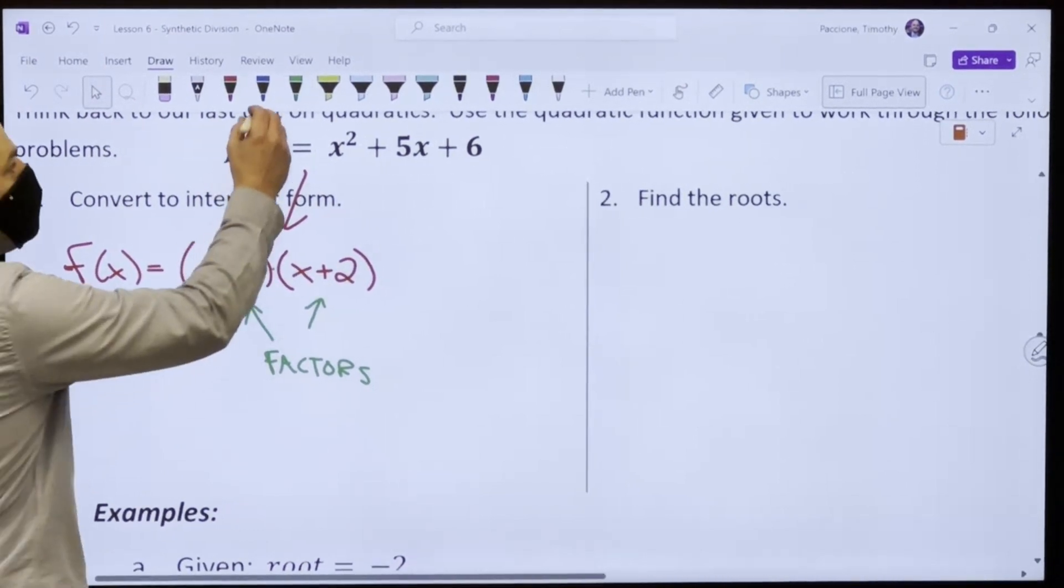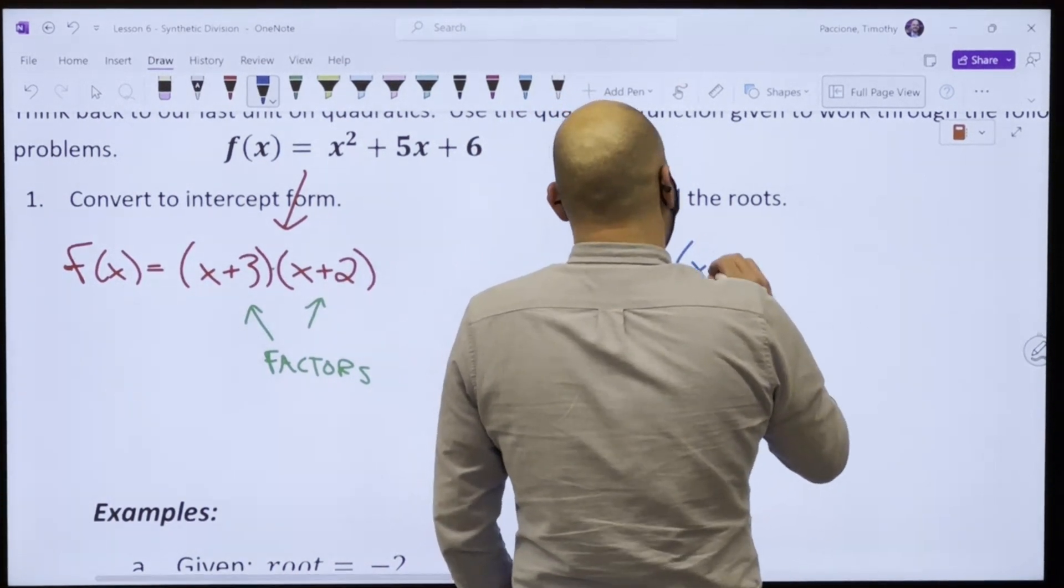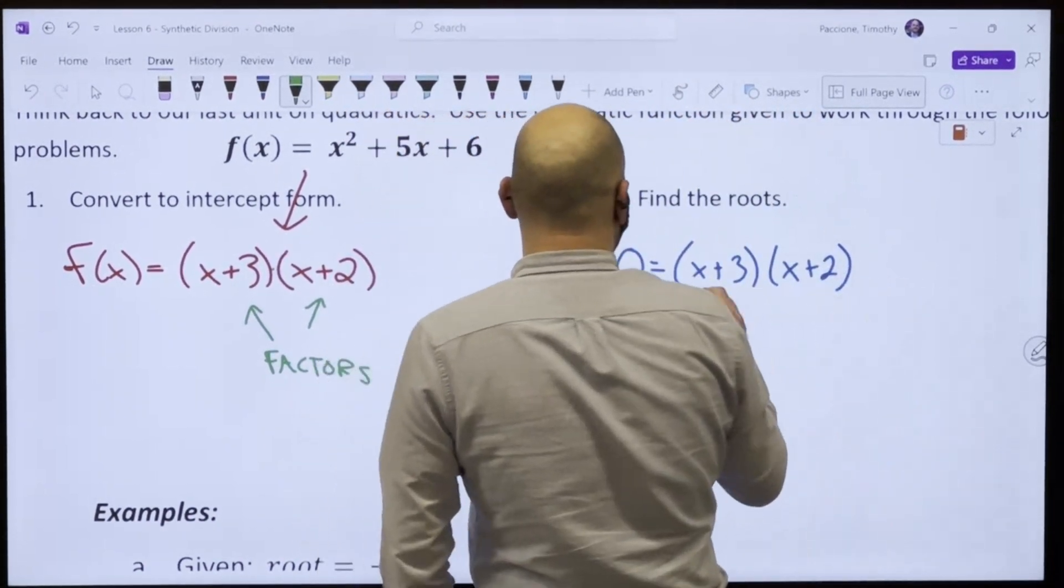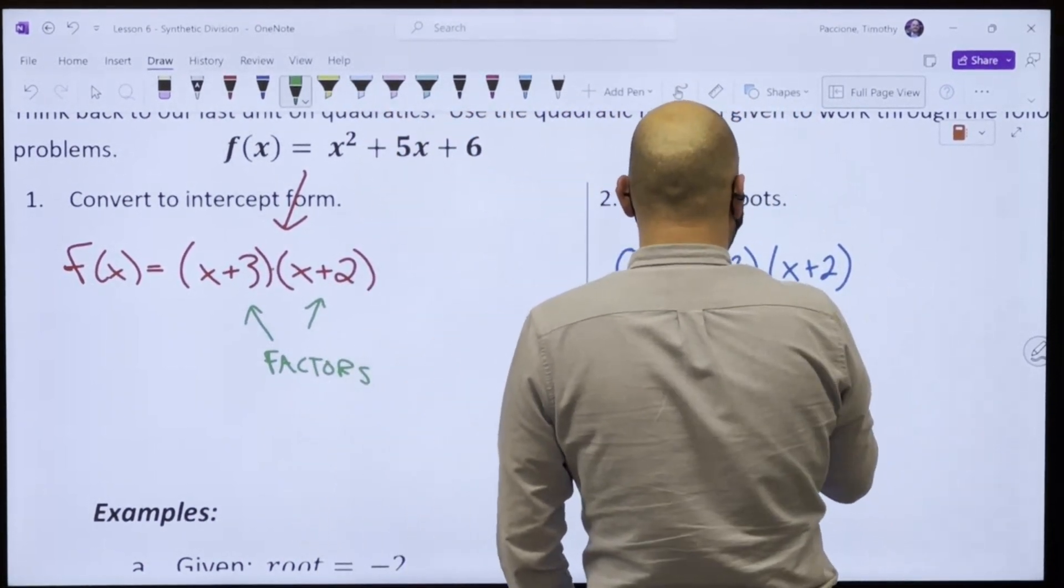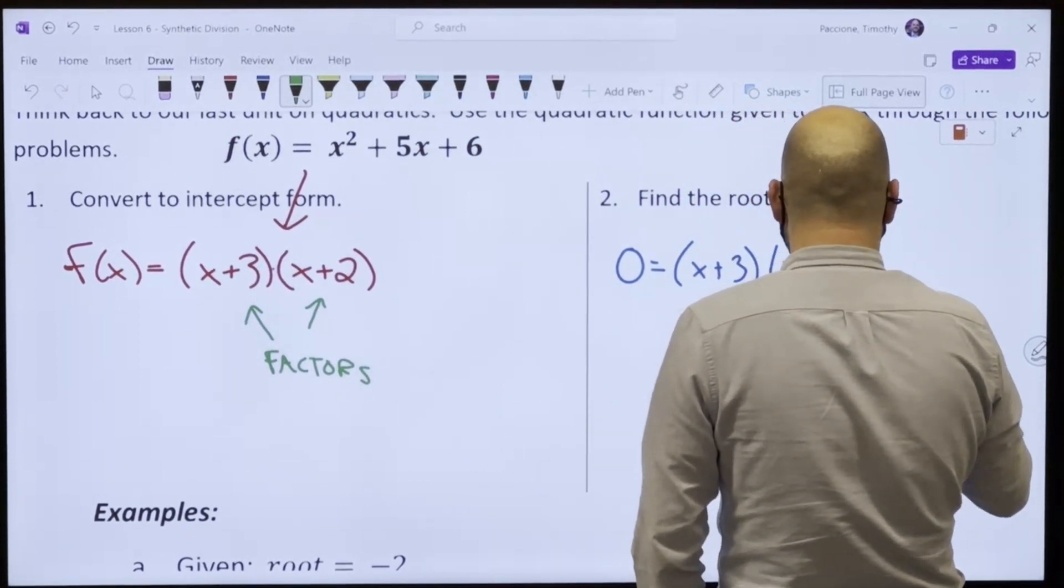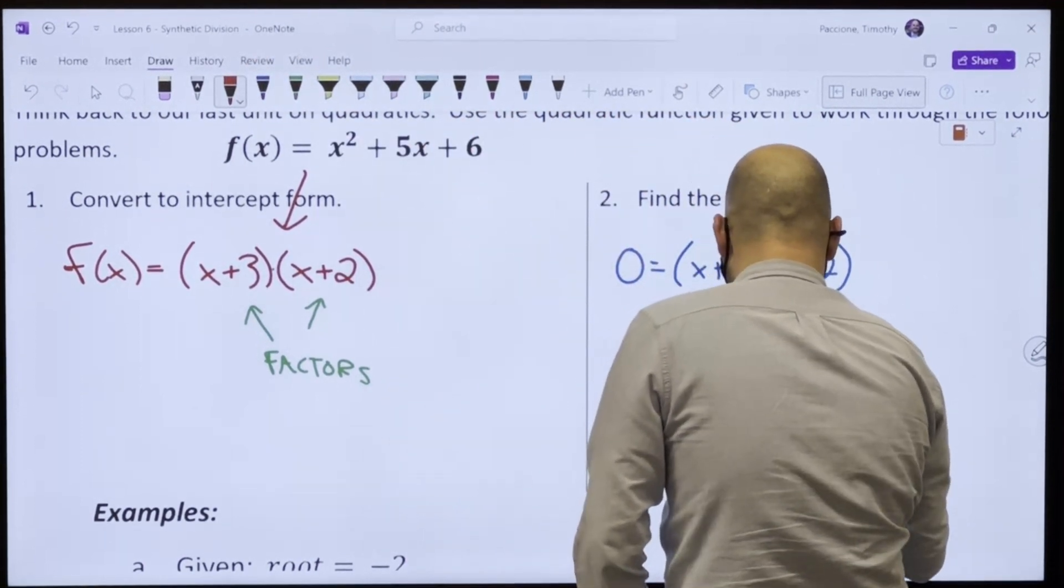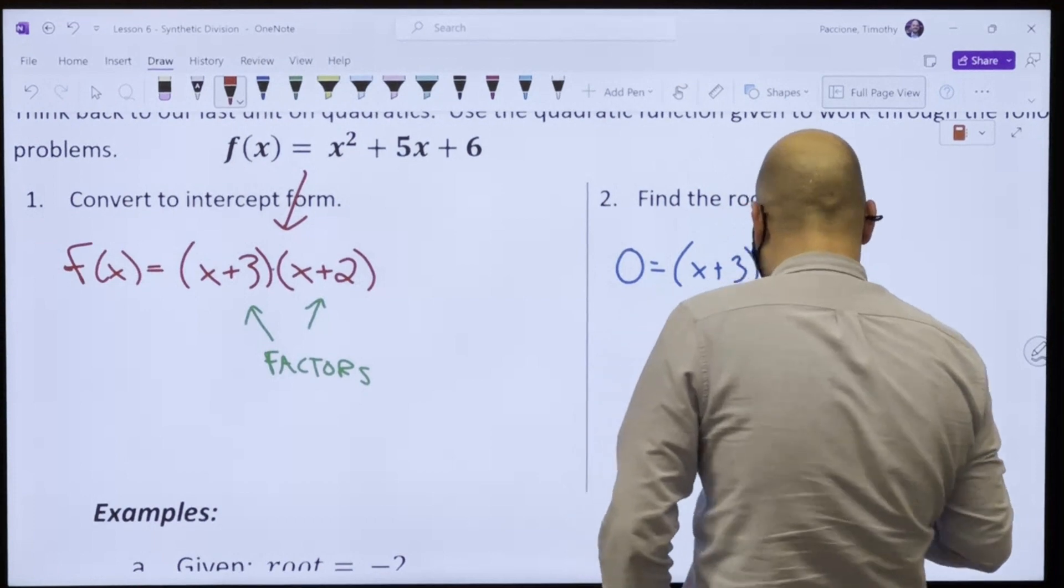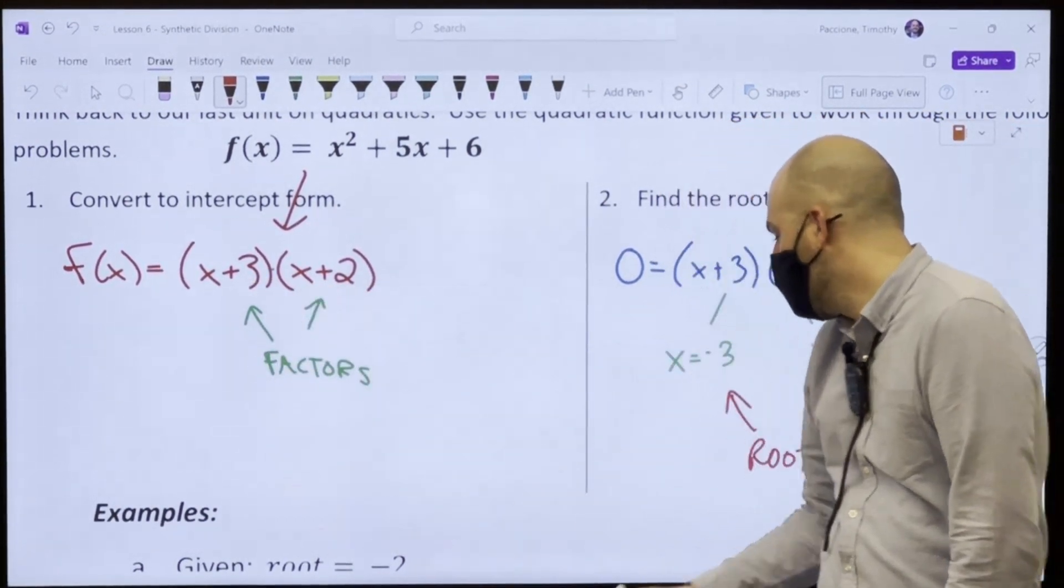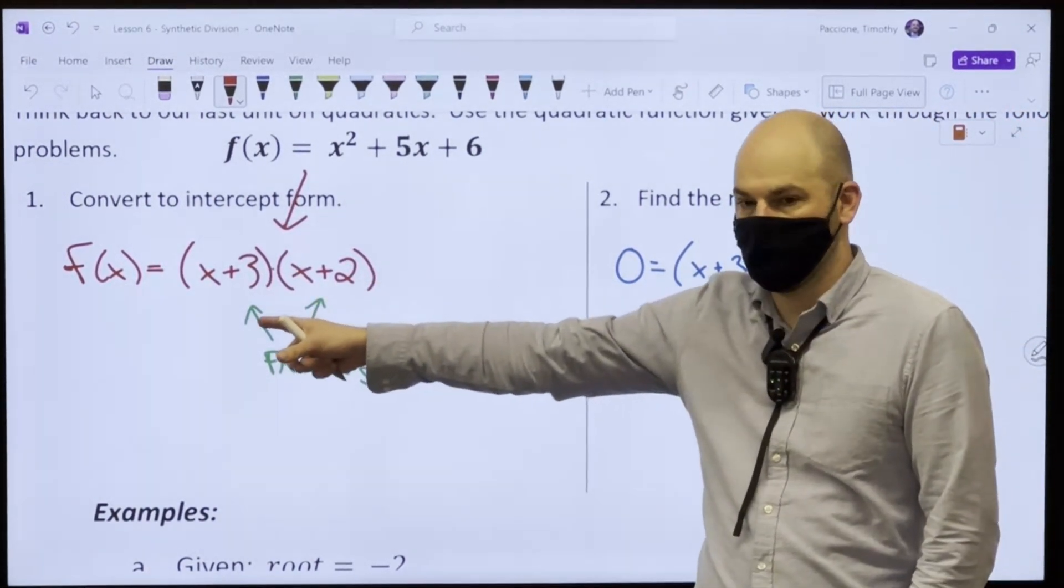Now, if I said find the roots, you would set it equal to 0, x plus 3, x plus 2. And then you would say, oh, my roots are x equals negative 3 and x equals negative 2. These are roots. This is nothing new. Right? But we have to know the difference. Factor. Root. Factor. Root. Root. Factor. We know the difference.